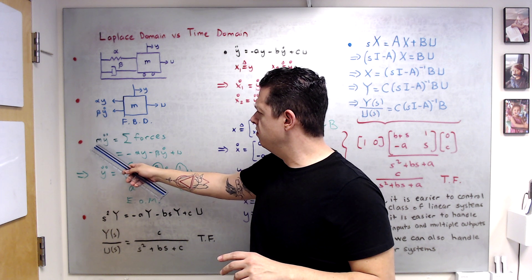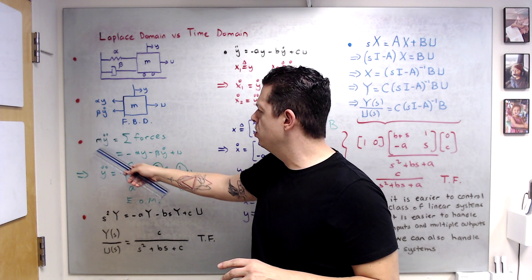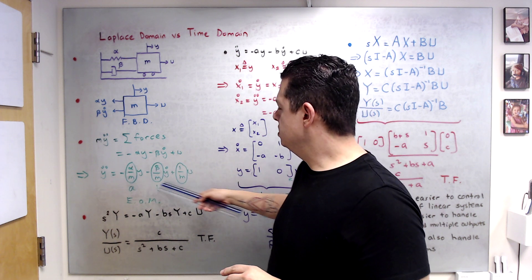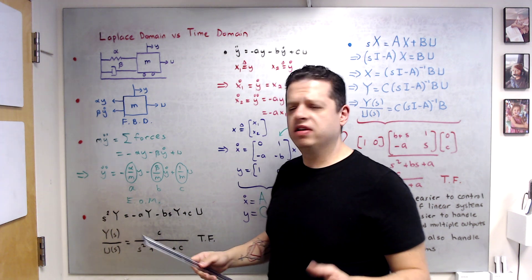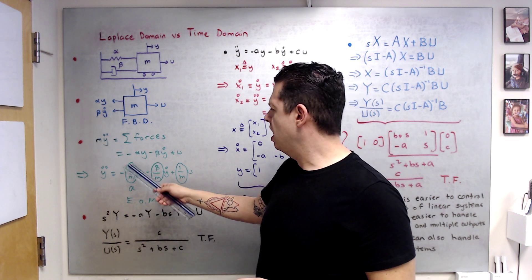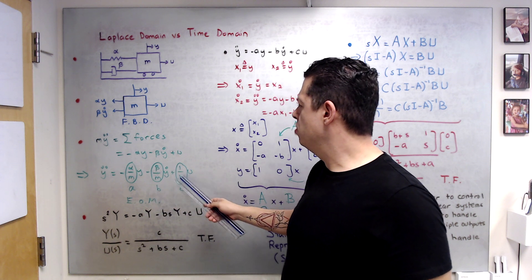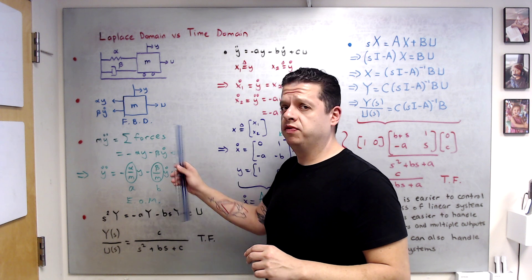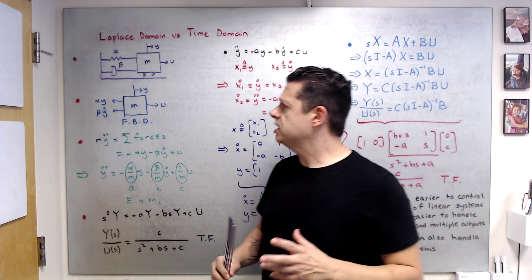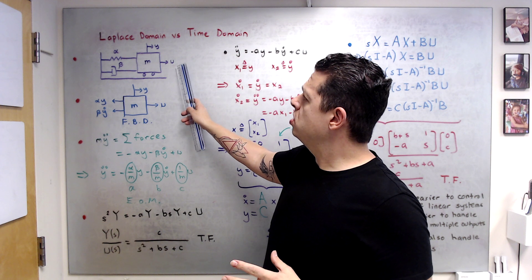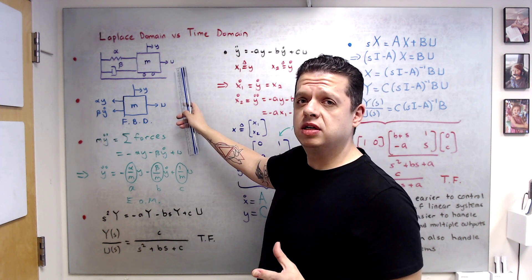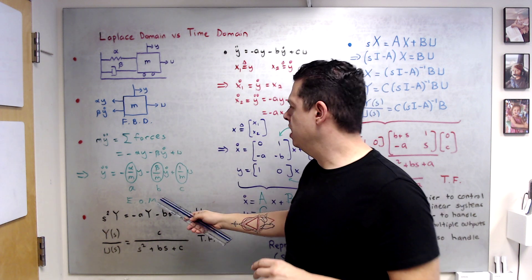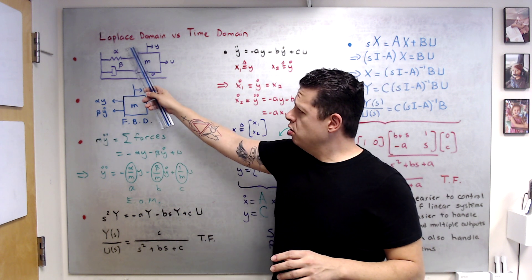We can arrange things by multiplying both sides by 1/M, giving us the same ordinary differential equation. For brevity, let alpha over M equal a, beta over M equal b, and 1/M equal c. This captures the equations of motion of the cart — in some sense, how the control inputs we apply to the system dynamically affect the position of the cart.